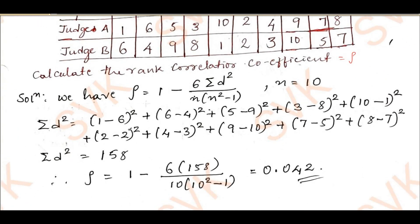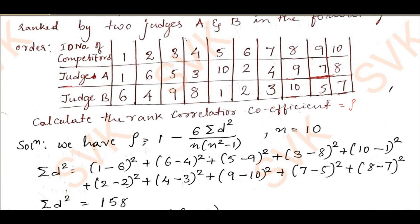We know how to find this. The standard formula is: rho equals 1 minus 6 times summation of d² divided by n(n² − 1). Here n is 10 since we have 10 competitors. To find summation of d², we take the difference of the two rank values for each competitor and square them, then sum them all up.